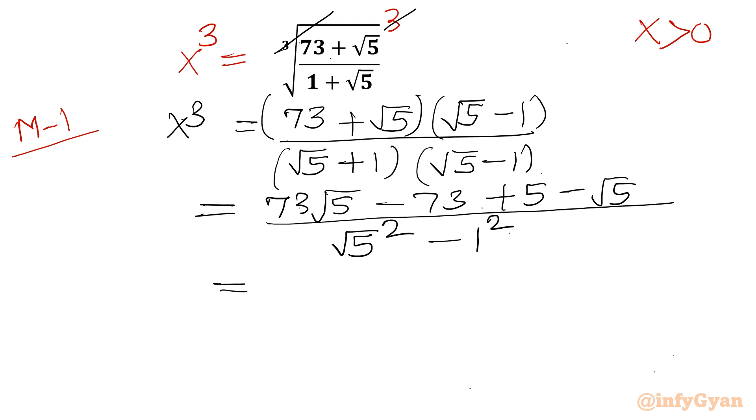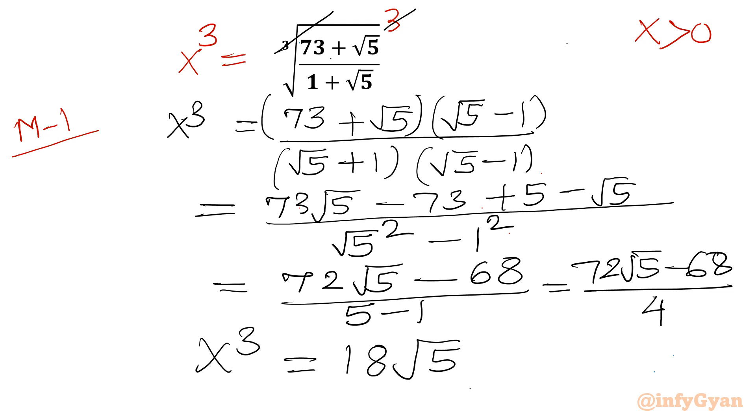Now 73 root 5 minus 1 root 5 gives 72 root 5 minus 68 over 5 minus 1. So I can write here 72 root 5 minus 68 over 4. And once I will divide by 4, I will get 18 root 5 minus 17. This is the value of x cube. Let me write here 18 root 5 minus 17. This is x cube.